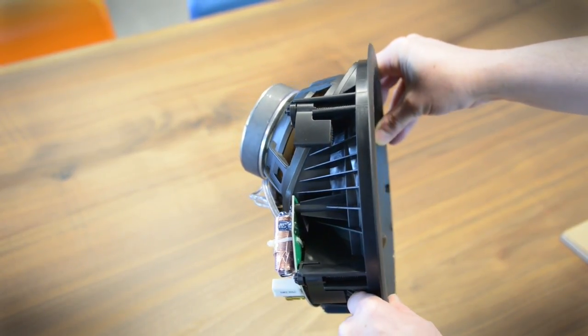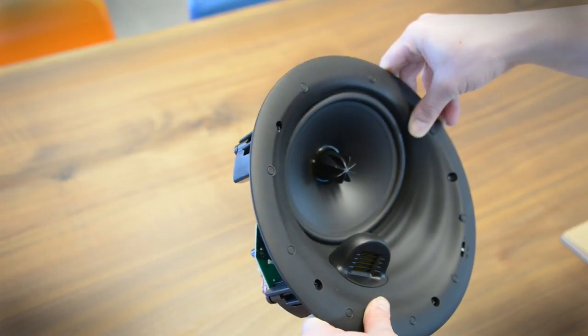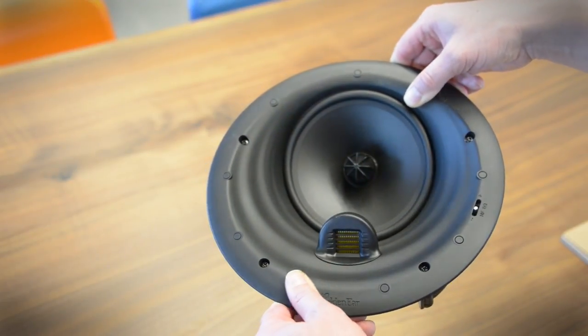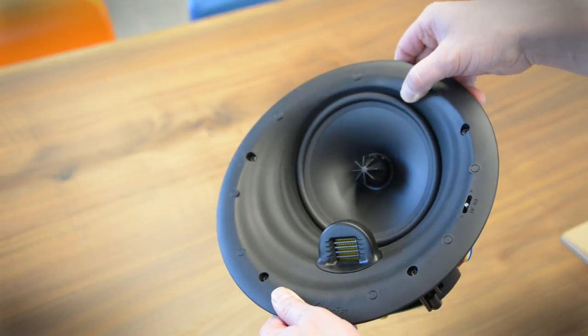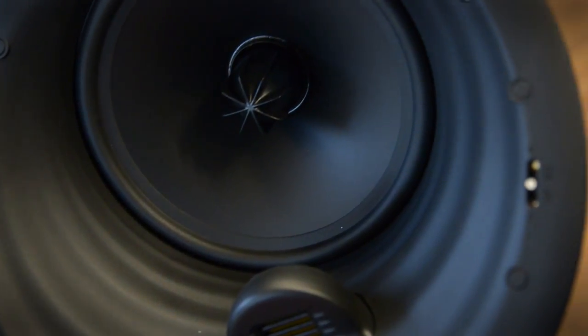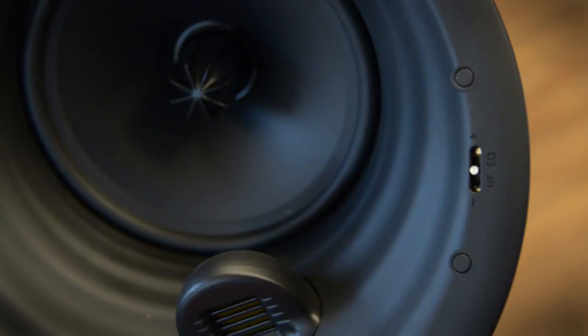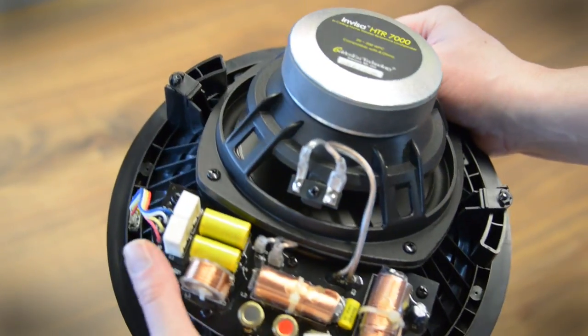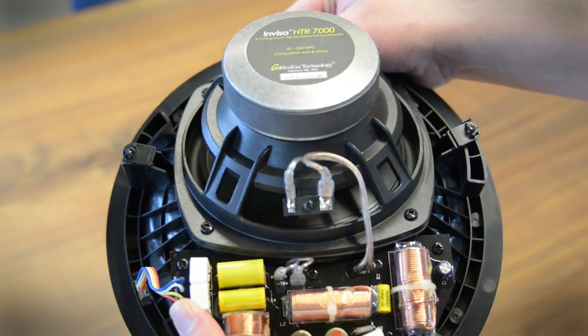They've got a 7-inch driver, this high-velocity folded ribbon tweeter. You'll notice that driver is actually aimed out into the room. That's a big part of why it sounds so good. These ripples here are diffraction controls, so it actually controls how the sound is dispersed in the room, and that's why we're able to get a really big, well-centered sound out of an in-ceiling speaker.